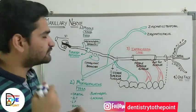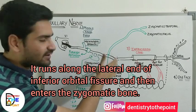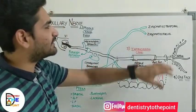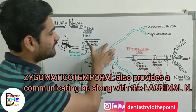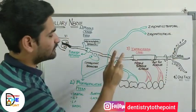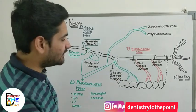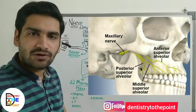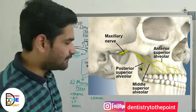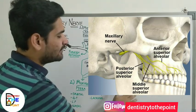The second branch given in the pterygopalatine fossa is the zygomatic branch, which divides into two: zygomaticotemporal and zygomaticofacial. The third branch is the posterior superior alveolar (PSA), which supplies the distobuccal root and palatal root of the maxillary first molar — apart from the mesiobuccal root — along with the second and third molars wholly, and the adjoining gingival tissues.